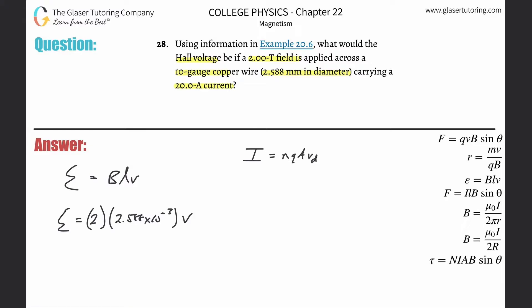I equals nqAv_d. In other words, the density of the charges in the material (copper) times the charge of each electron that's flowing times the cross-sectional area of the wire times the drift velocity. So what I'm going to do is solve that equation for v_d, so that's equal to current divided by nq times the area.